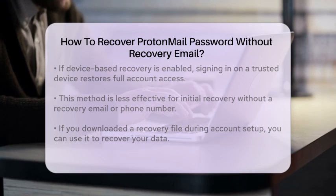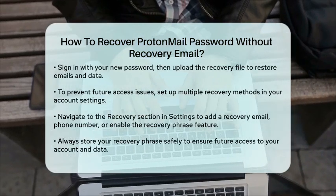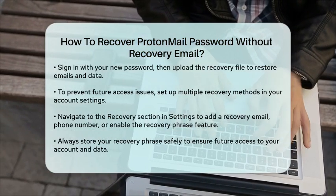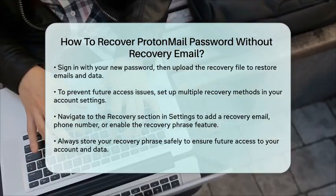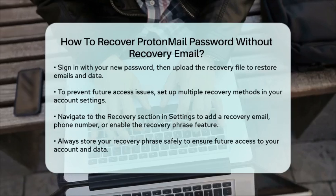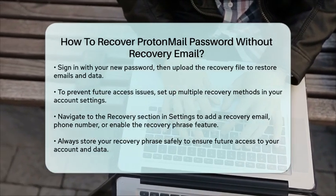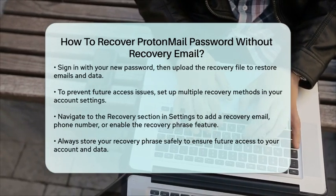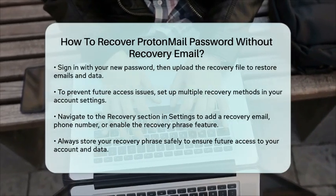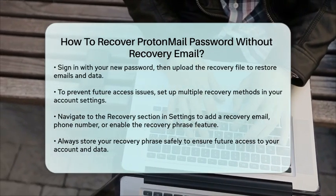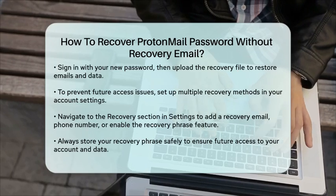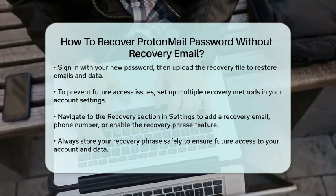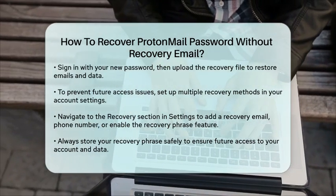Setting up recovery methods. To avoid getting stuck in this situation in the future, it's a good idea to set up multiple recovery methods. Log in to your ProtonMail account, go to settings, and navigate to the recovery section. You can set up a recovery email, recovery phone number, or enable the recovery phrase feature. For the recovery phrase, click the Allow Recovery by Recovery Phrase switch, generate the phrase, and store it safely. By using one of these methods, you can recover your ProtonMail password even without a recovery email. It's always a good idea to have multiple recovery methods set up to ensure you never lose access to your account and encrypted data.